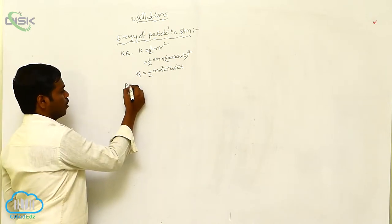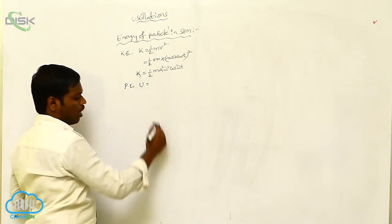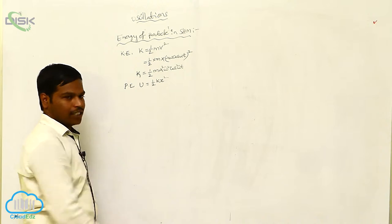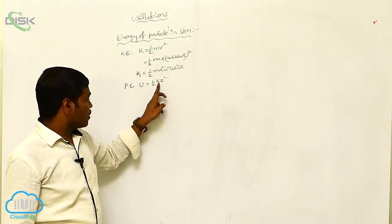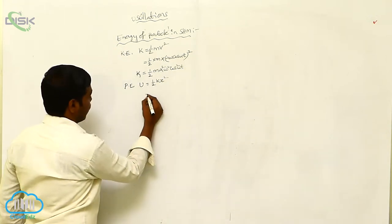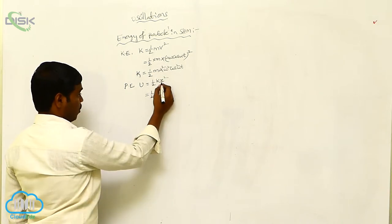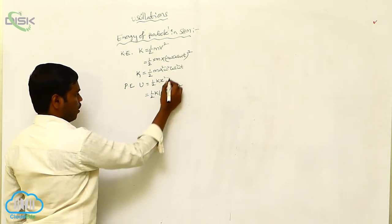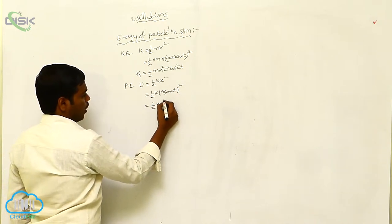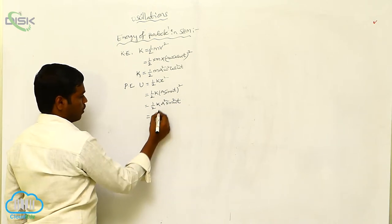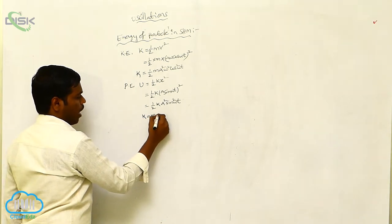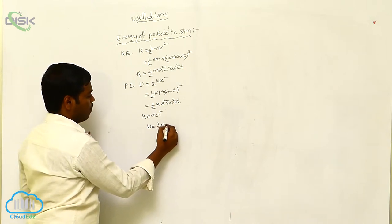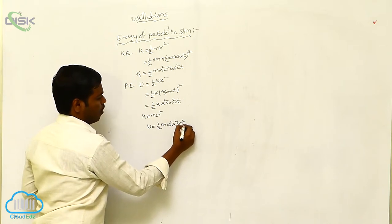The potential energy of the particle is U equals half kx squared, where x is the displacement and k is the constant. Substituting x equals A sin(ωt), we get half k A squared sin squared ωt. Since k equals mω squared, substituting here, U equals half m ω squared A squared sin squared ωt.